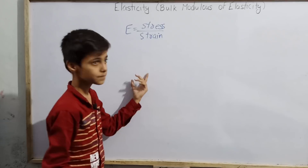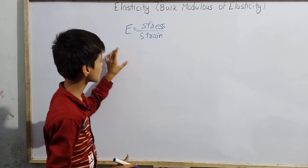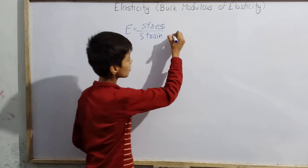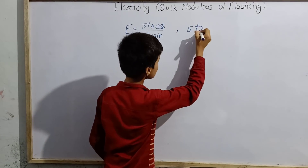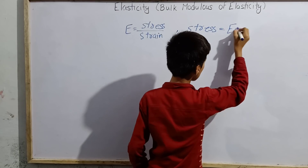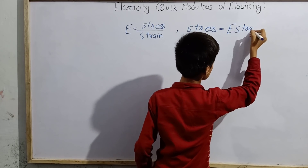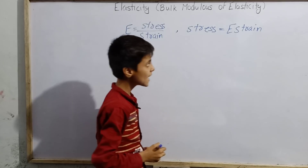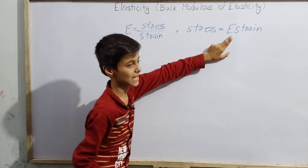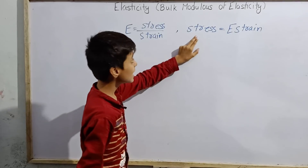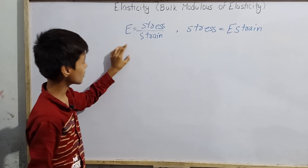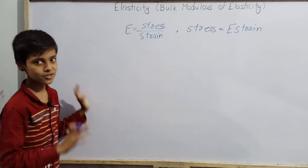But why stress divided by strain, and why not strain divided by stress? Because by Hooke's law, stress equals E times strain. Since strain is in multiplication with E, when rearranged, it comes in division with stress. So stress divided by strain equals E, meaning E equals stress divided by strain.